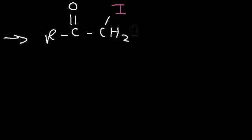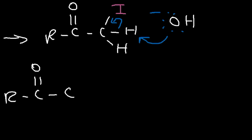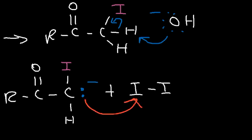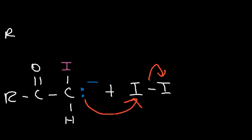Next, we need to remove the other two alpha hydrogens. We'll use hydroxide to do that. This time, I'm not going to draw the resonance structure of the enolate ion — I'm going to leave the negative charge on the carbon atom, so you can be familiar with the different ways of showing the mechanism. The enolate ion is going to react with another iodine molecule. This carbon is going to attack one of the iodine atoms, expelling the other one. We need to repeat this process — we need to replace all three alpha hydrogens with iodine atoms.